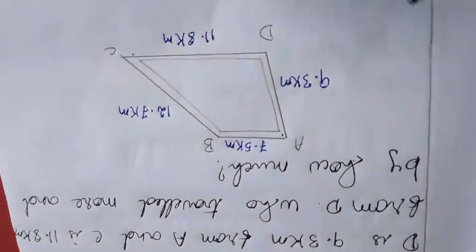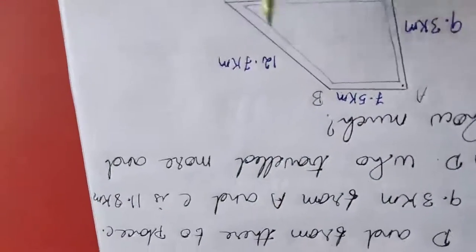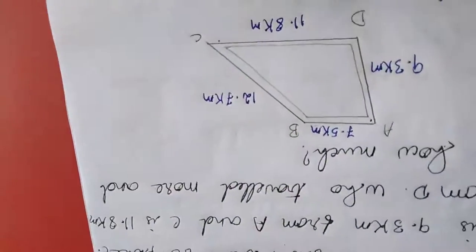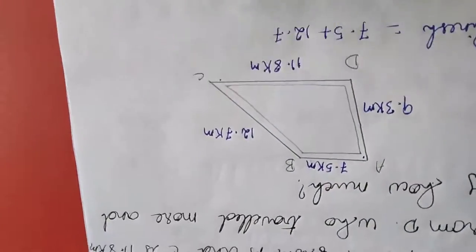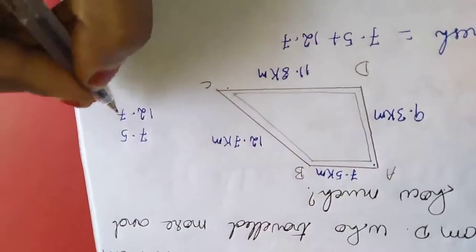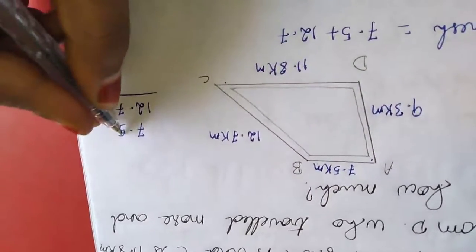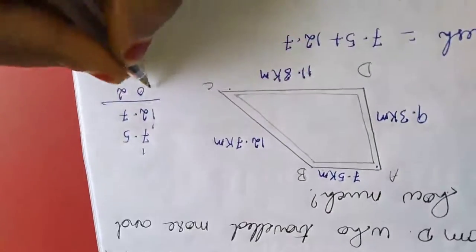First one name is Dinesh. Dinesh is moving like this, so 7.5 plus 12.7. I am adding here, 7.5, 12.7. Dot wants to move straight up. So 12, 2 carrying 1, 9, 10, 0 carrying 1.